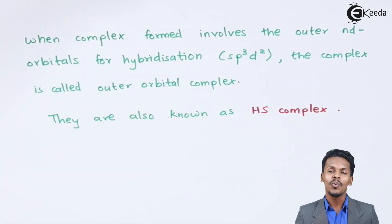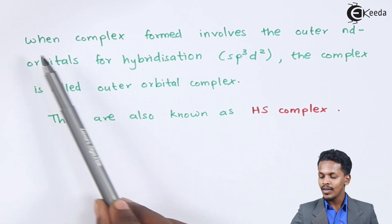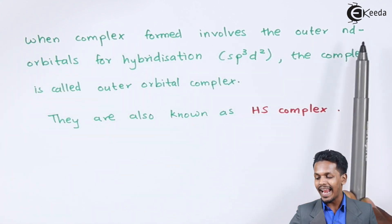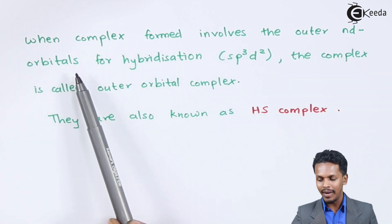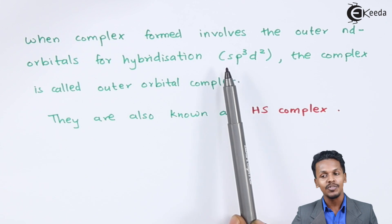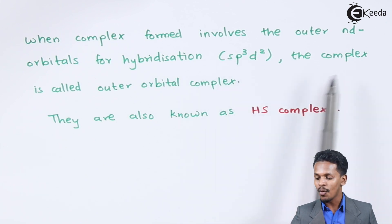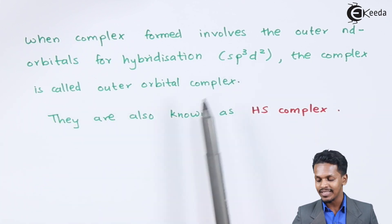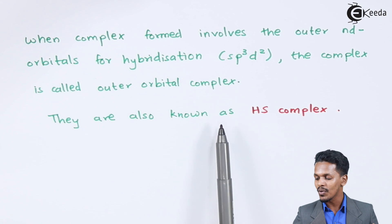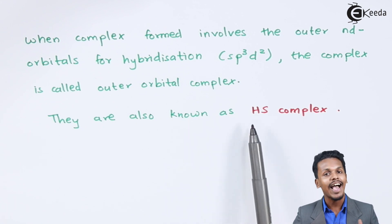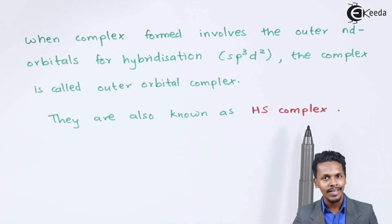Now let me talk about the outer orbital complex. When a complex forms involving the outer n-d orbitals for hybridization of sp3d2, the complex is called an outer orbital complex and they are also known as HS complex, which is high spin complex.